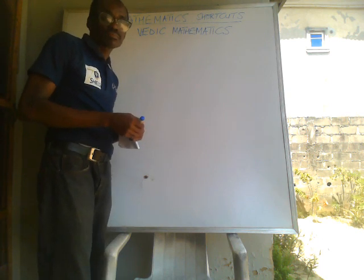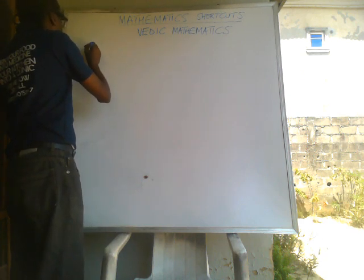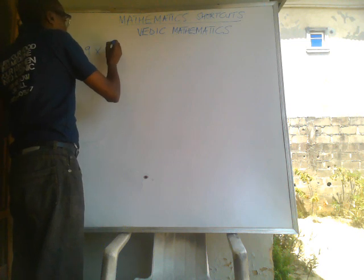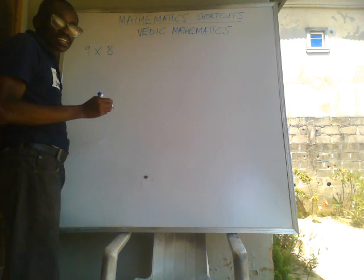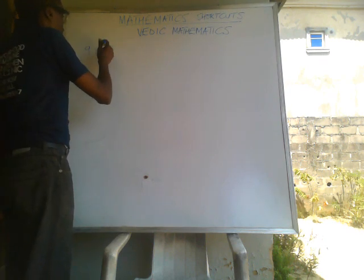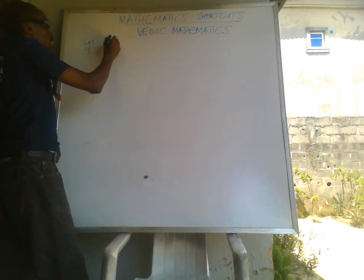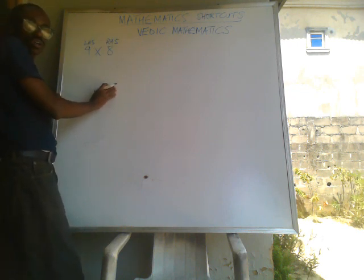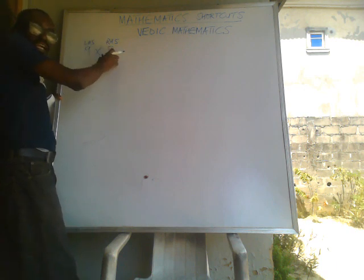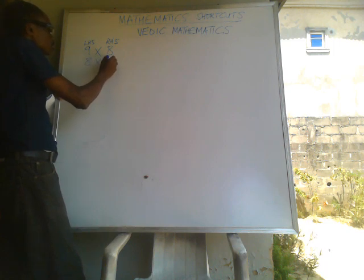The first example we'll look at is 9 times 8. Supposing you have 9 times 8 and you've forgotten the answer — what do you do? First, note that this is the left hand side and this is the right hand side. Make sure the 9 is on the right hand side, so we switch sides: we're going to have 8 times 9, with 9 on the right hand side.